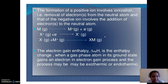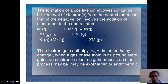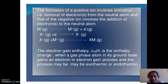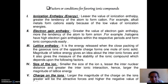The formation of the positive ion involves the ionization process — the removal of an electron from the neutral atom. The formation of the negative ion involves the addition of electrons to the neutral atom. So two processes are occurring: removal of an electron from the neutral atom, and addition of an electron to the neutral atom. For the removal process, we require ionization energy.